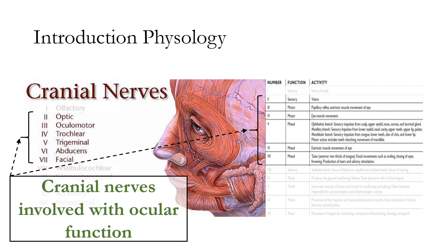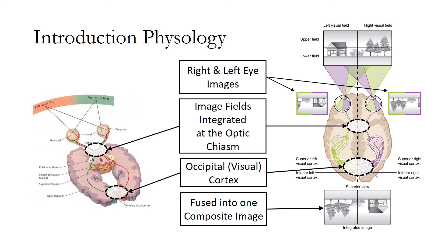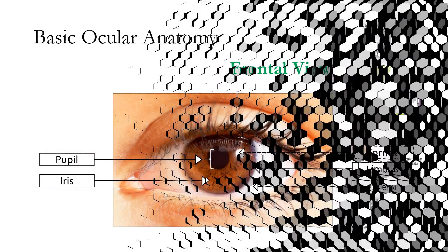The eyes and adnexia are connected in some way to 6 of the 12 cranial nerves. This slide illustrates how the separate images of both eyes are integrated at the optic chiasm and fused into one composite image at the occipital or visual cortex located in the back of the brain.